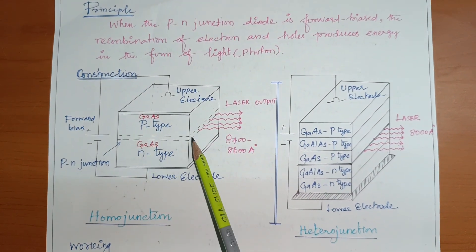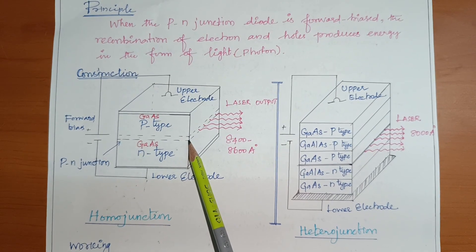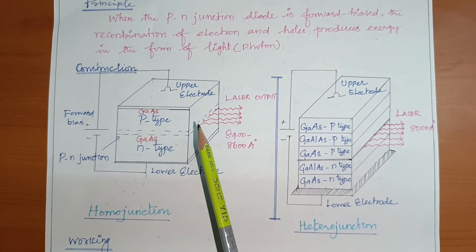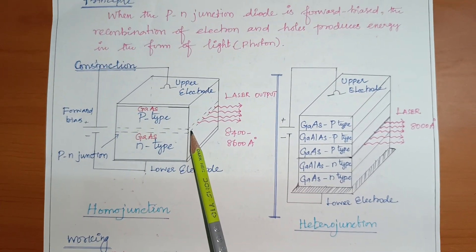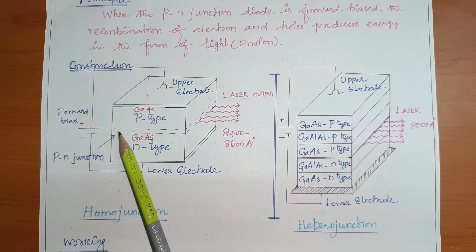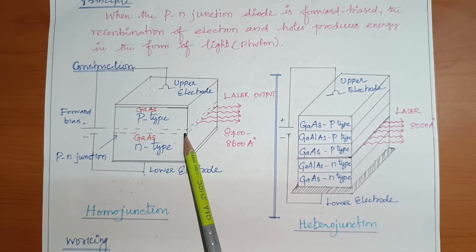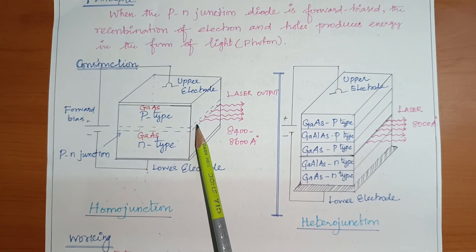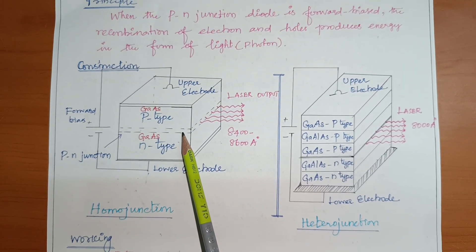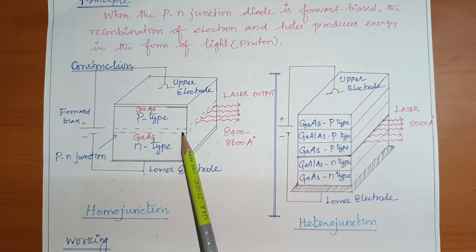In other laser types such as Nd:YAG and CO2, we use separate optical mirrors — a 100% reflecting mirror and a partially reflecting mirror. But here, in the semiconductor laser, the p-n junction itself acts as the optical resonator.